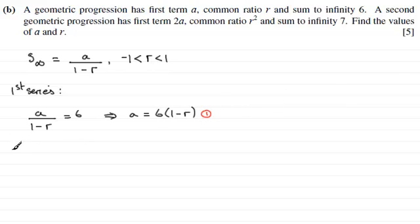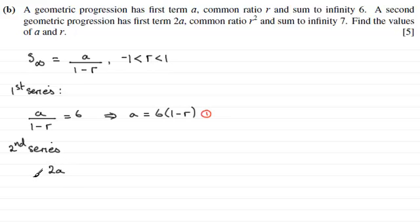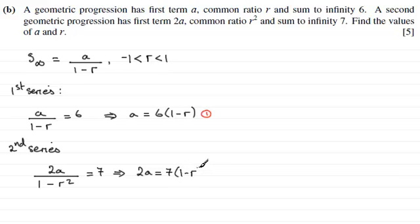We get our other equation by looking at the second series. This one has a geometric progression with first term 2a and common ratio r squared, and the sum to infinity is 7. Applying the formula, we get 2a divided by 1 minus r squared equals 7. Multiplying both sides by 1 minus r squared, we get 2a equals 7 times 1 minus r squared. We'll call this equation 2.